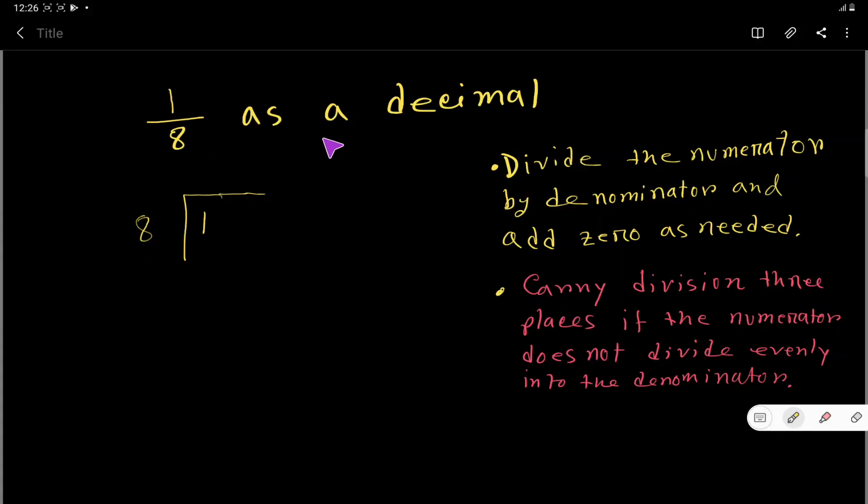Well, 1 over 8 as a decimal—that is how to convert a fraction to decimal. So to do so, you have to divide the numerator by denominator. That is, you have to apply the long division method.